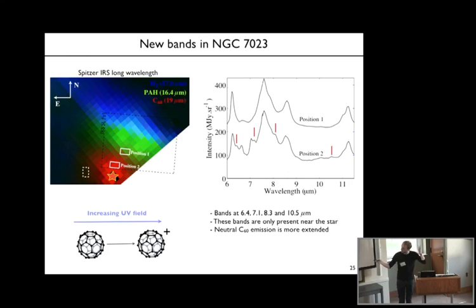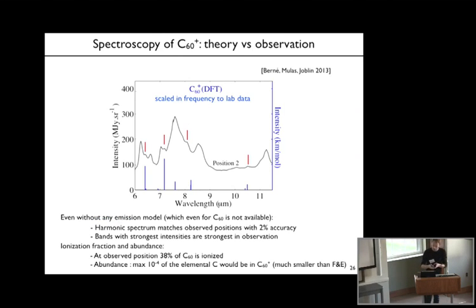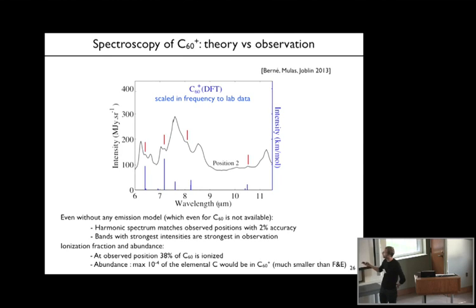The astronomical interpretation is that when you get really close to the star, perhaps you can finally ionize the C60 molecule, and that these bands are due to the ionized—cationic—form of C60. To back up this proposal you need some spectroscopy. This is the superposition of the observed spectrum with the detected bands, and below in blue is the spectrum calculated from density functional theory—Giacomo conducted these calculations—scaled in frequency to laboratory data obtained recently by Bastien Kern.